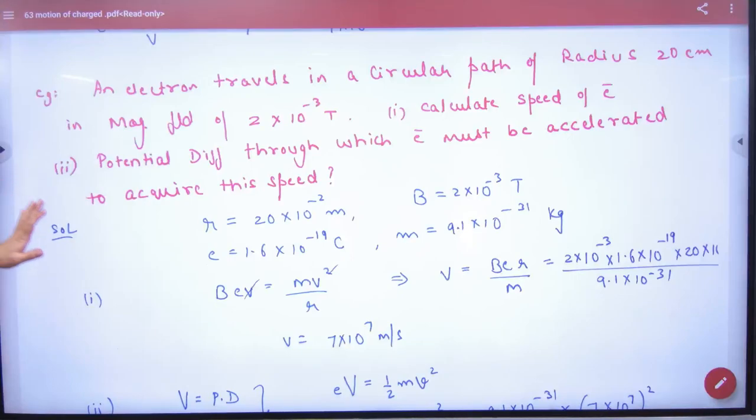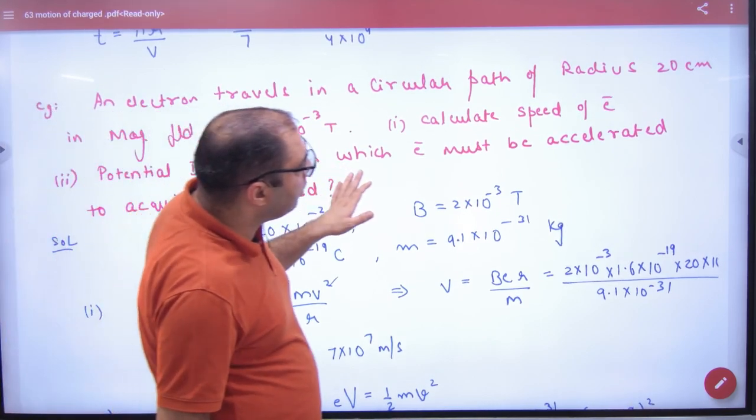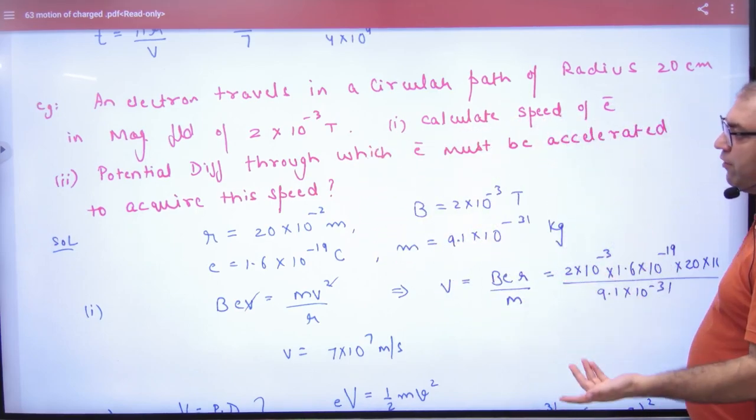So this is sheet number 63. There are some questions about this. In motion of charged particle, an electron travels in a circular path of radius given, magnetic field given, calculate speed of electron.